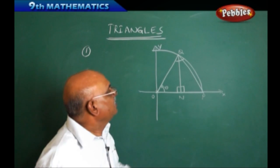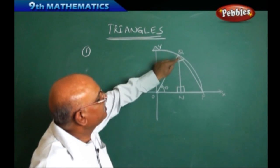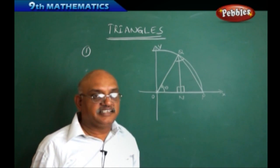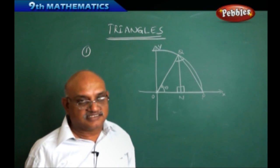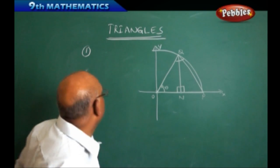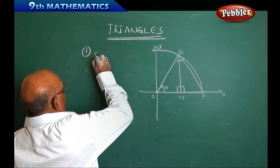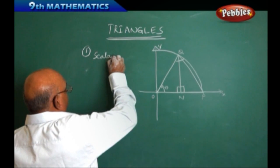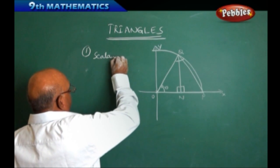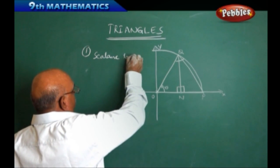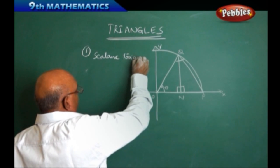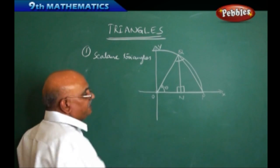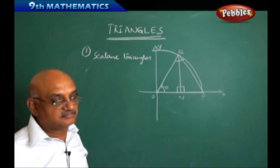Depending upon the line movement, we can say there are three types of triangles. The first type of triangle we are calling a scalene triangle. In a scalene triangle, all three sides are different.